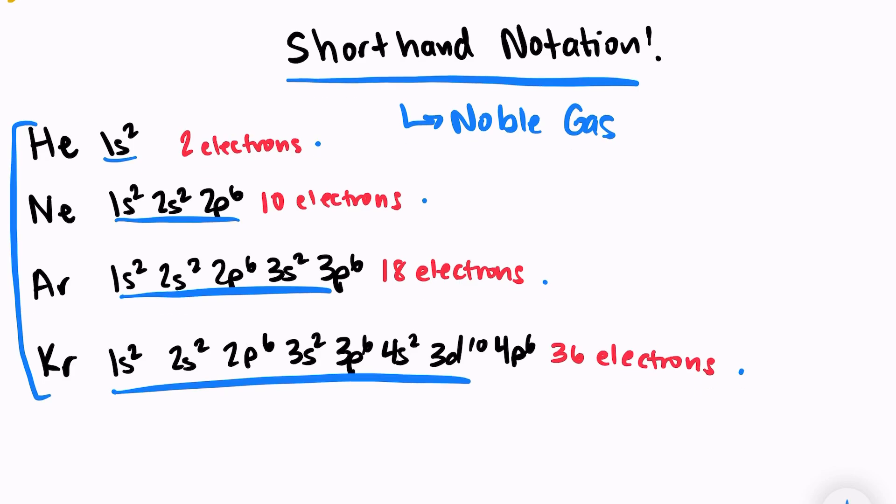So to use the shorthand notation, we're going to use the noble gas in our electron configuration. Let me show you something like lithium first. Lithium has three total electrons. And if I want to write the noble gas or shorthand configuration, what I'm going to do is take helium in brackets. Those brackets represent the electron configuration of helium, which is 1s2.